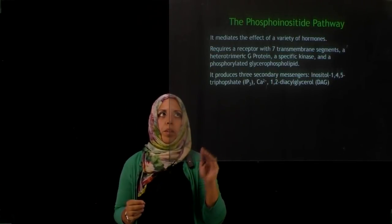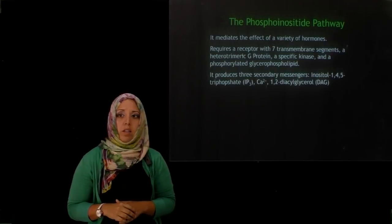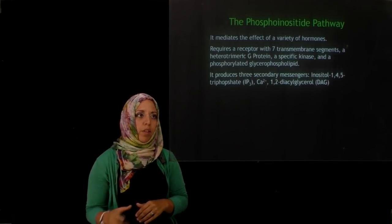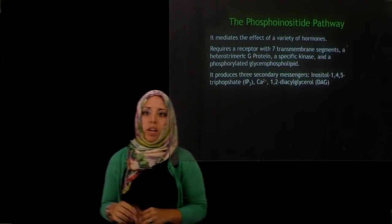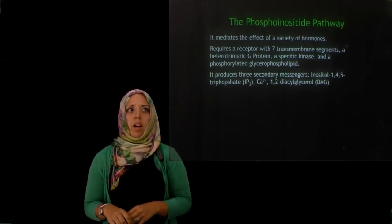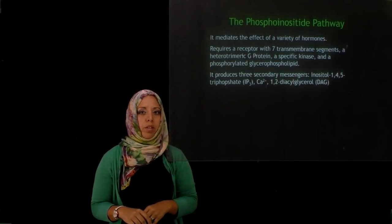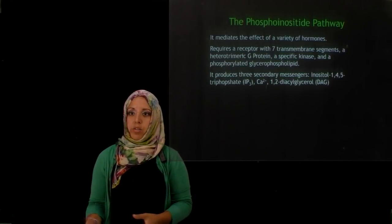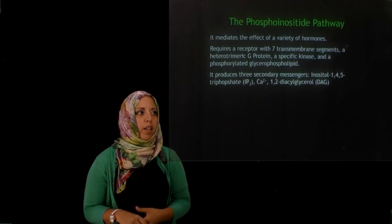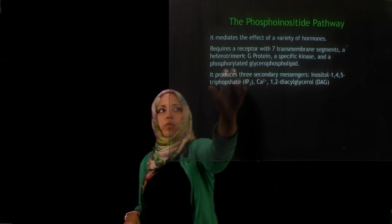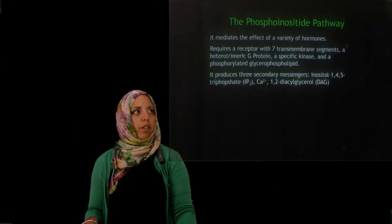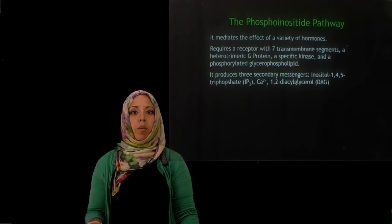In this short video we're going to be talking about the phosphoinositide pathway, which produces three different secondary messengers: inositol 1,4,5-triphosphate, also known as IP3; calcium; and DAG, 1,2-diacylglycerol. It requires a receptor composed of seven transmembrane segments, activates a hetero-trimeric G protein, a specific kinase, and a phosphorylated glycerophospholipid. The phosphoinositide pathway mediates the effect of a number of different hormones.